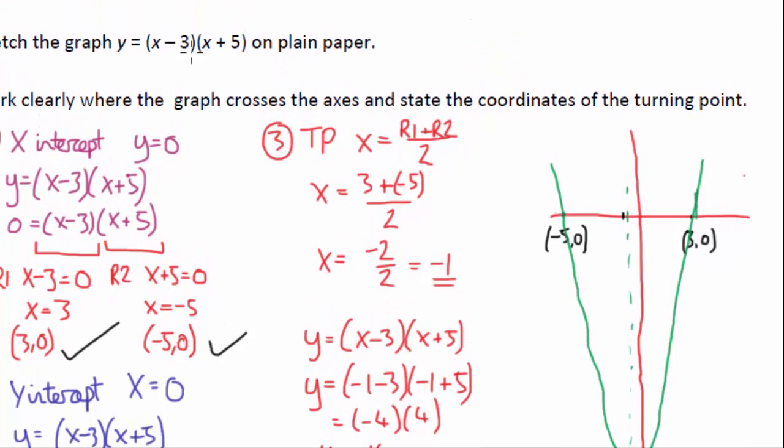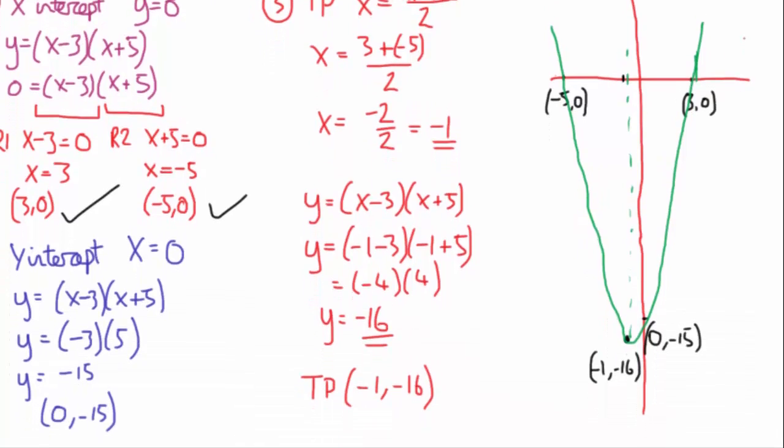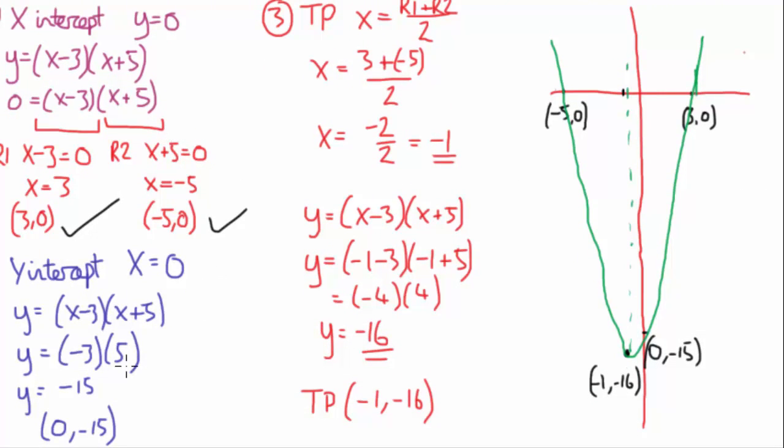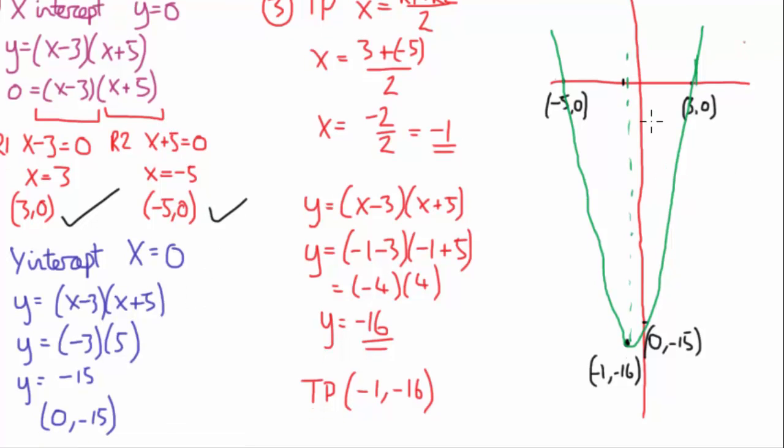So always refer back to the actual equation. Work out the x-intercept, work out the y, work out the turning point, sketch it. If they ever ask you what is the line of symmetry, it's basically where it crosses the x-intercept. So in this case, x equals minus 1. But that's essentially all you need to know with that. So hopefully that's helped.